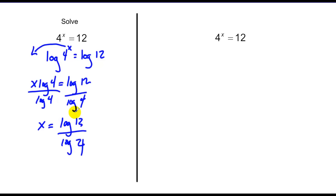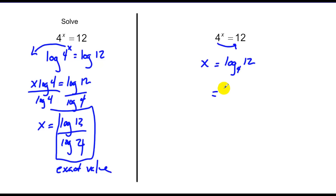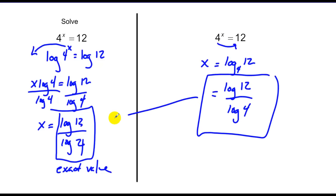This does not simplify — if this were 12 over 4, yes, but log of 12 over log of 4 doesn't go to a subtraction or anything. This is the exact value. Notice another way to do the same problem: slide the base down by converting from exponential to logarithmic form, getting x equals log base 4 of 12, then using change of base to get log of 12 over log of 4 — same answer, two different ways. For simple terms, converting to logarithmic form and then using change of base is a really easy approach.